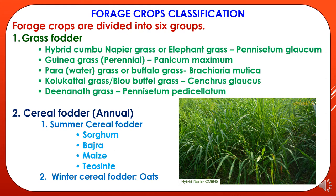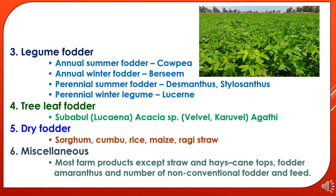The second category is cereal fodder, which are annual crops divided into summer cereal fodder like sorghum, bajra, maize, and teosinte, and winter cereal fodder like oats. The third group is legume fodder, divided into annual summer fodder like cowpea, annual winter fodder like berseem, perennial summer fodder like Desmanthus and Stylosanthes.